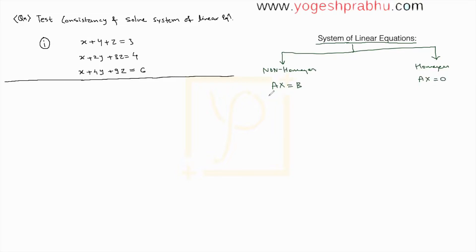Now let us look at the question. The question says 'test consistency' — we'll come to that a little later. We are supposed to solve the system of linear equations. These are all linear equations because all the powers of the variables x, y, and z are one — power one means it's linear. Higher order terms like x squared would make it non-linear. All three equations together form a system.